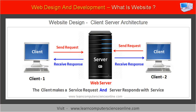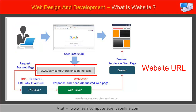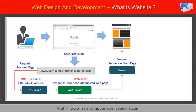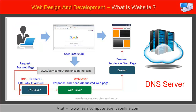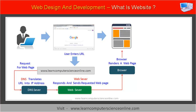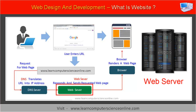On the internet, all connected computers have a unique IP address. When the user types the website name and URL into the browser, the browser sends this information to the DNS server. The DNS server holds the record of all the registered domain names and their corresponding server IP address. The DNS server then converts the website URL into the server IP address which holds that specific website's files. A request is then sent to the web server for the website files, and the web server responds with the requested web pages.